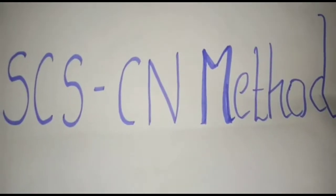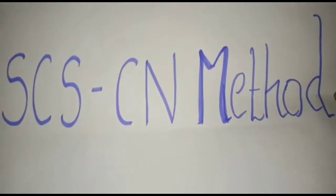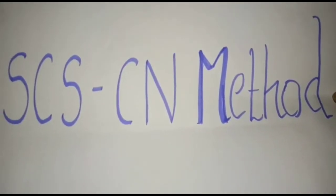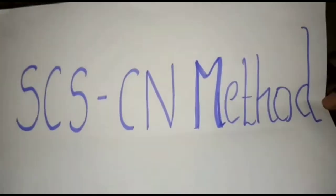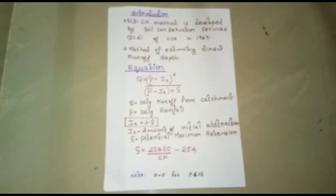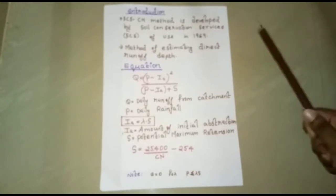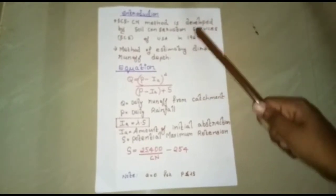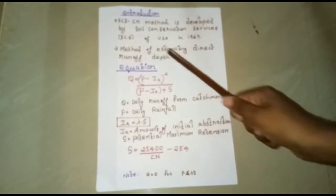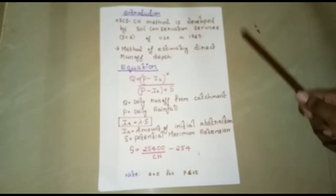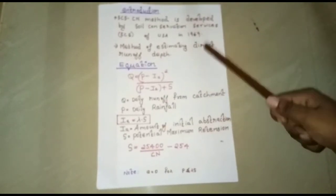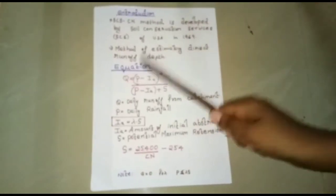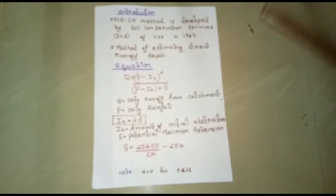Hi friends. I am here to describe the SCSCN method. Coming to the introduction, the SCSCN method is developed by Soil Conservation Services, SCS of USA in 1969, and it is a method of estimating direct runoff depth.